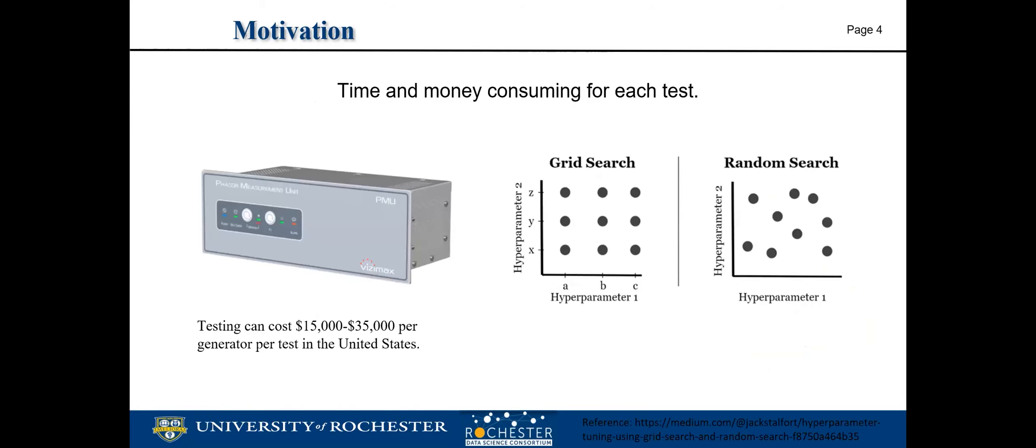Traditionally, this process is highly reliant on domain experts who try different parameter combinations according to their experience until a satisfactory combination is found. For example, for the power grid system, we need domain experts and phaser measurement units to perform the test phase. This testing phase can cost a lot of money and human effort. In order to solve the problem, automated parameter optimization methods are required. Our goal is to develop efficient, accurate, and online parameter updating methods.